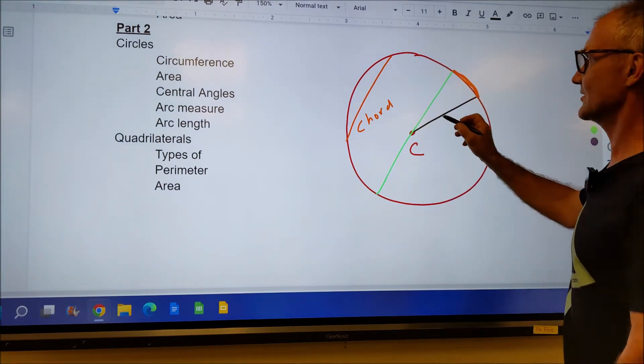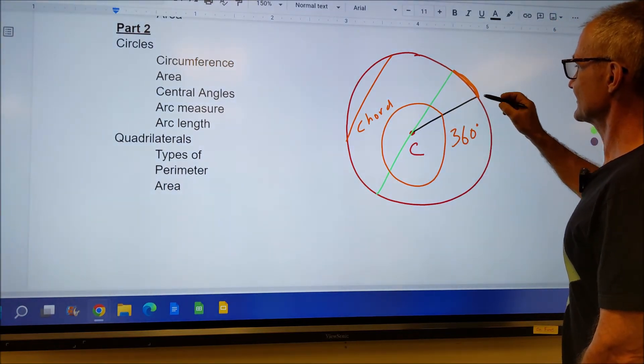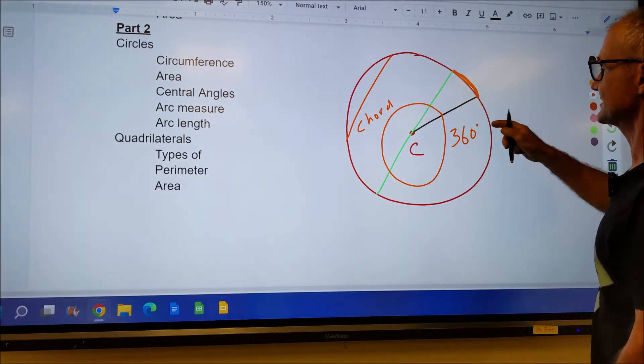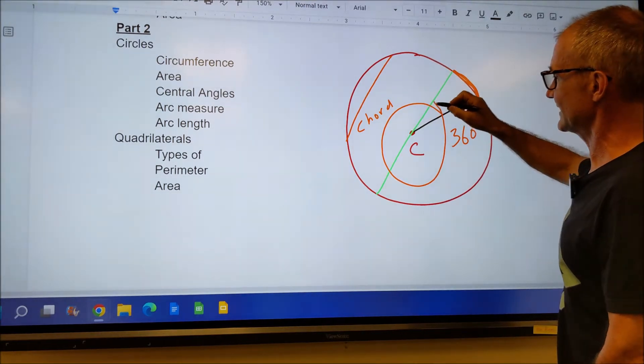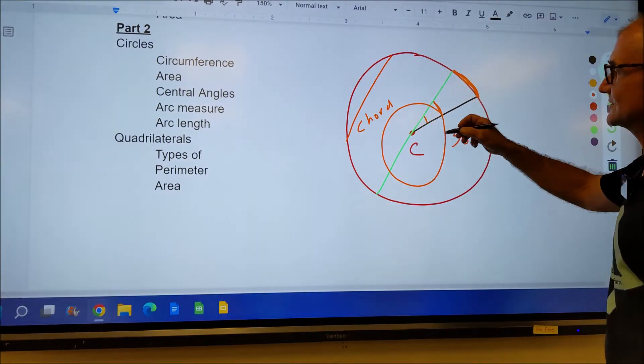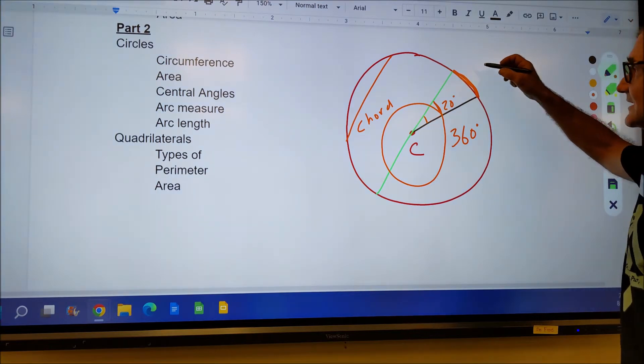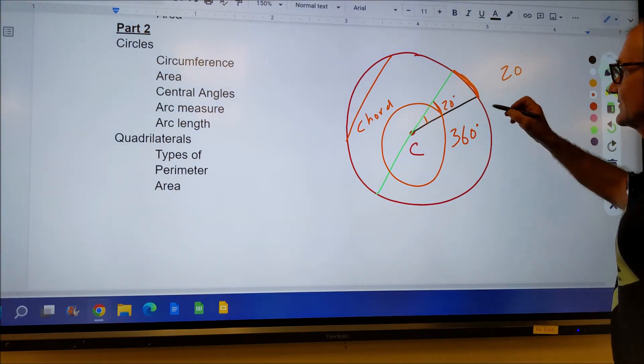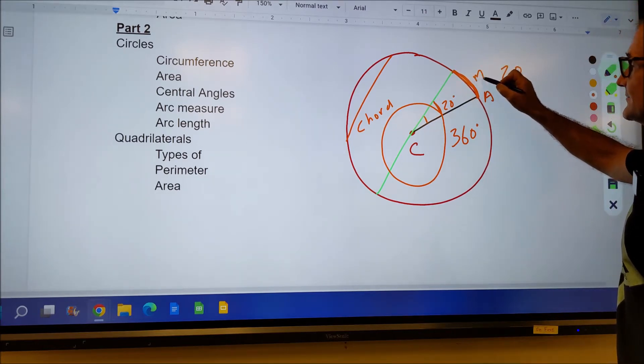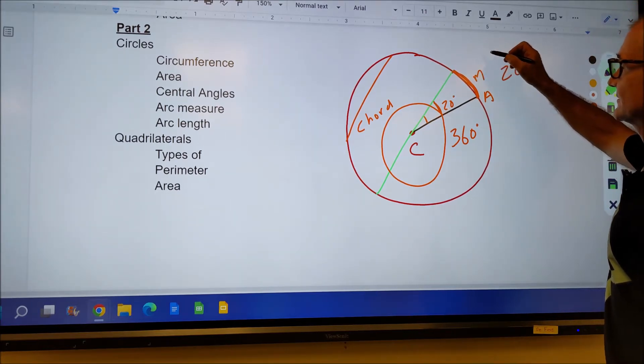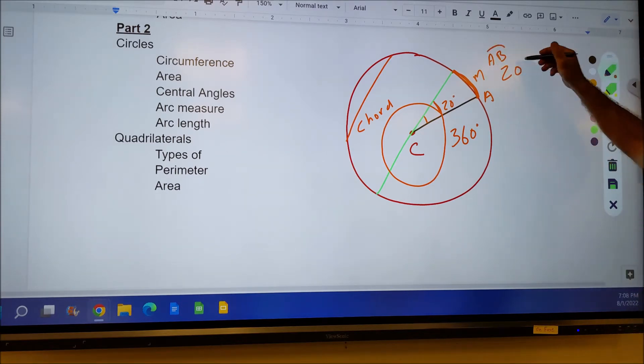To go all the way around the circle is 360 degrees, and you can refer to the arc measures in degrees as well. So if this interior angle right here at the center of the circle, if that is 20 degrees, then the measure of the arc is 20 degrees. So if I had a point A and point B, the measure of arc AB is 20 degrees.